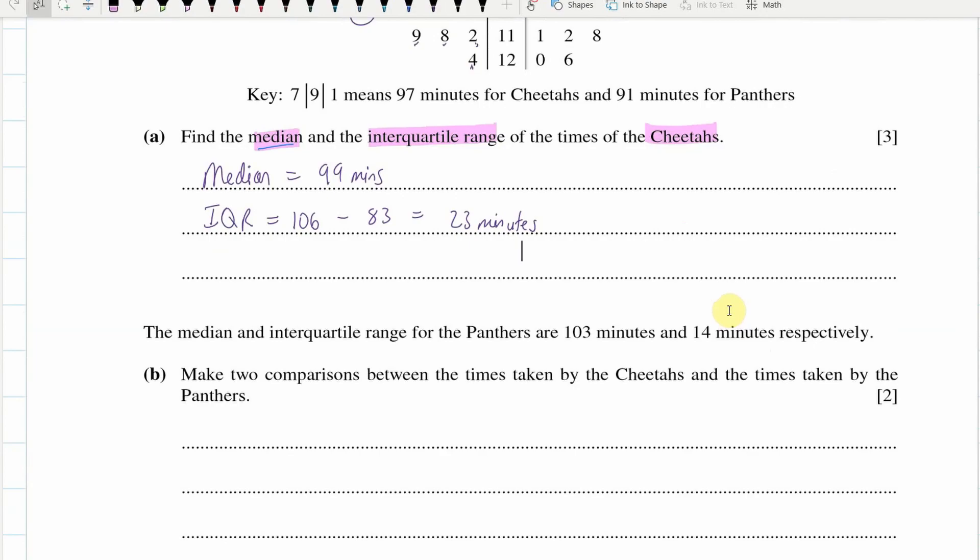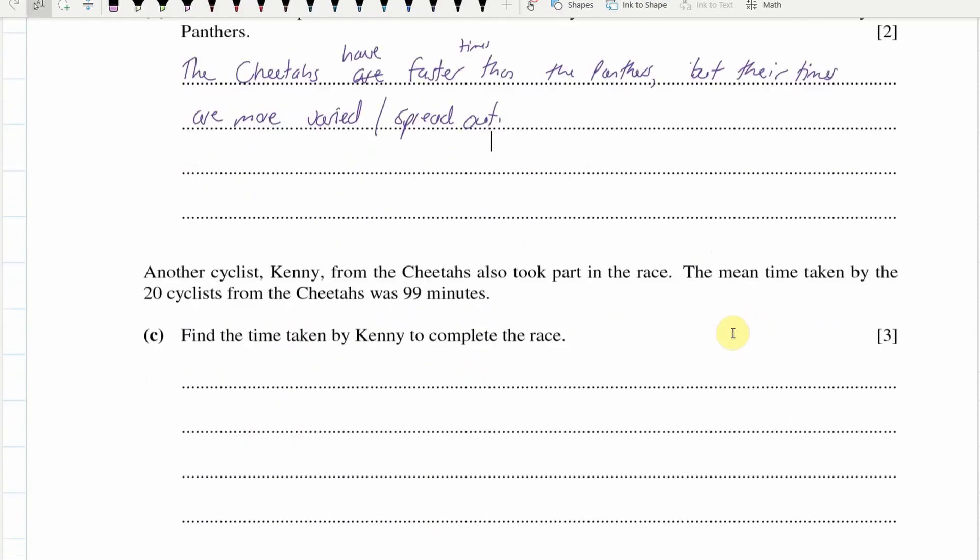And then we've got two comparisons that we've got to make between the times of the Cheetahs and the Panthers. Okay, so the Cheetahs, look at their medians. The Cheetahs, what's the median time? 99. Okay, Cheetahs have faster times than the Panthers. But their times are also more spread out. 23 IQR versus 14. Their times are more varied, slash spread out.